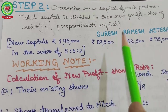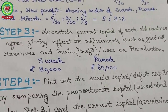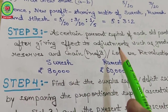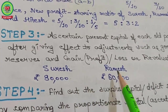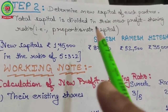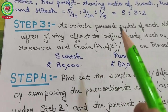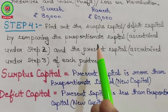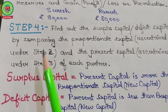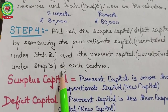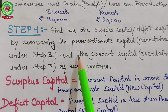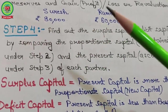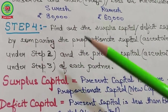Step three: ascertain the present capital of each old partner after giving effect to adjustments such as goodwill, reserves, and revaluation gains. In this example, Suresh's capital after adjustment is ₹80,000 and Ramesh's is ₹60,000. Step four: find out the surplus or deficit capital by comparing the proportionate capital from step two with the present capital from step three.